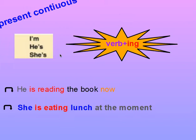For example, right now we are explaining the lesson — we have the verb explain and we add ing to it. Let's have some examples. He is reading the book now. The word now is a keyword for the present continuous.